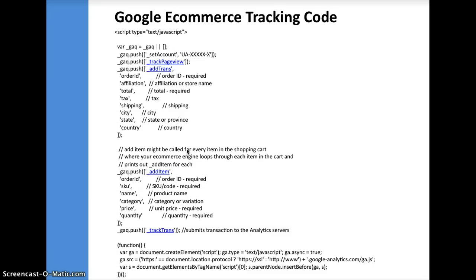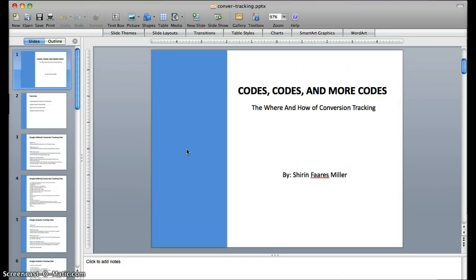As you can see, there are a lot of different things you can capture. You can calculate the total, the tax, the shipping, the city — this basically gives you an overview of what it would look like. Of course, you will put in your own codes and your own client ID number for all these codes, and then you can track your pages. Thank you!